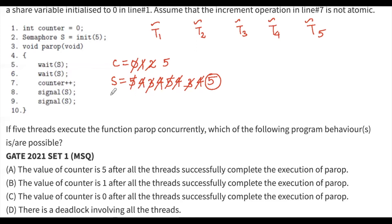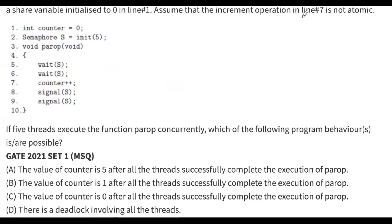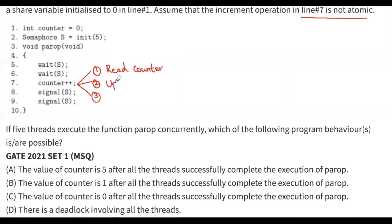Now let's check option B using preemption. Since line 7 is not atomic, we split this increment instruction into three micro-instructions: first read the counter value, next update the counter value by one, then write it back to the counter variable. This is how line 7 is split into three micro-instructions, and I'll preempt the process to check if counter value of 1 is achievable.